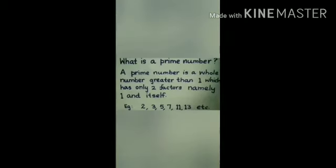What is a prime number? A prime number is a whole number greater than 1 which has only two factors namely 1 and itself. Examples are 2, 3, 5, 7, 11, 13 etc.